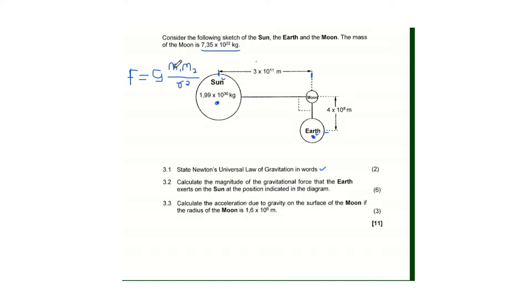r is the distance between the two masses. To calculate the force we need the mass of the Sun, the mass of the Earth, and the distance between them. We are not given the distance directly, but we can apply Pythagoras' theorem because we have two known distances forming a right triangle.